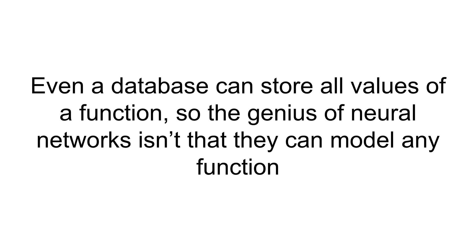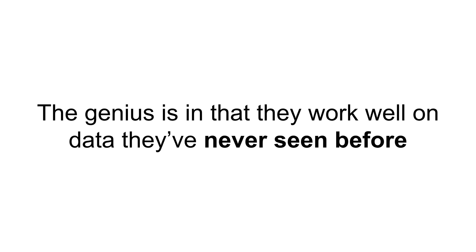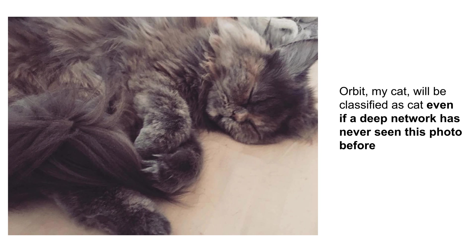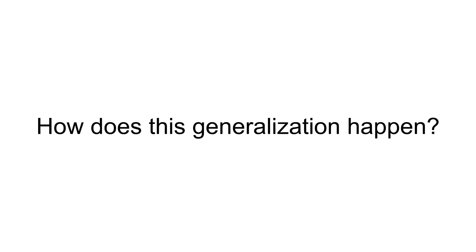So the genius of neural networks isn't really that they can model functions, because even a database can do that. The genius of neural networks is in modeling and predicting data that they've never seen before. For example, this is a photo of Orbit, my cat, which a neural network classifies as a cat even if that network has never seen this photo before. If you input this in a database, obviously it will not return anything, because the database will not have an image of my cat — it will simply have images of cats that were stored when you were storing those images in it.